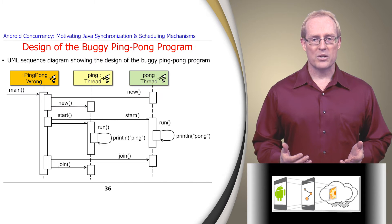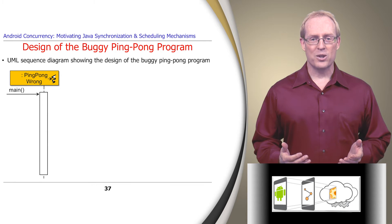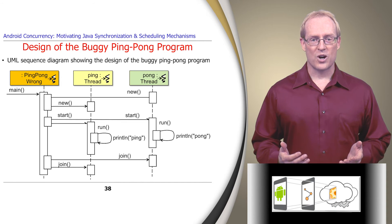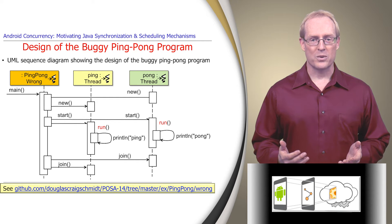This slide shows a UML sequence diagram that depicts the design of our example program. The main thread invokes the main entry point method of the ping-pong-wrong class, which creates and starts two other Java threads whose run hook methods implement the ping-pong algorithm concurrently. This link contains the code we're about to examine.